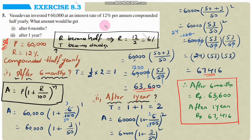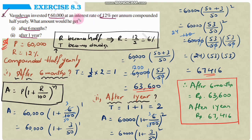Next, question number 5: Vasudevan invested rupees 60,000 at an interest rate of 12% per annum compounded half-yearly. What amount would he get after 6 months, and what amount after 1 year? We need to find the amount after 6 months and after 1 year.